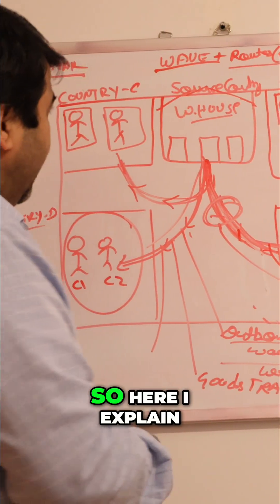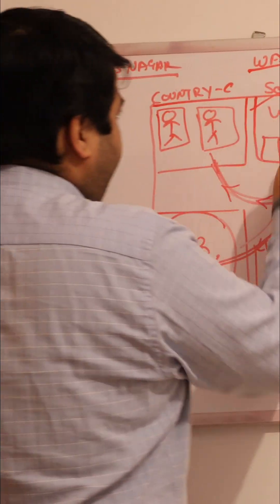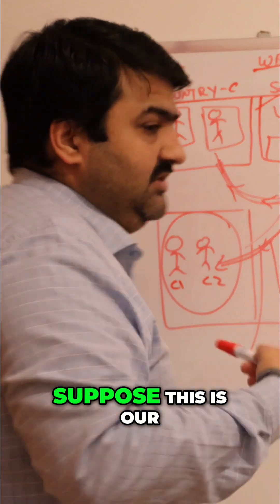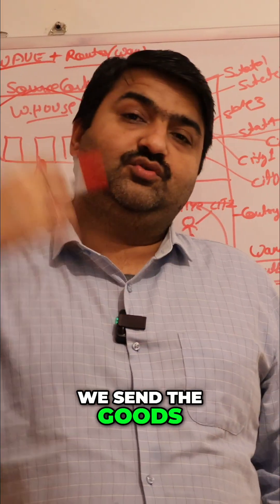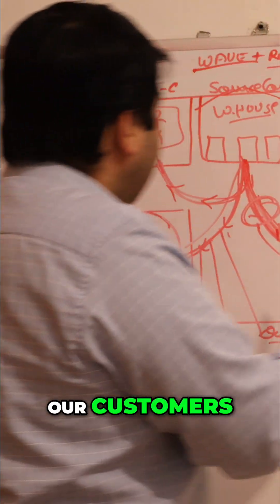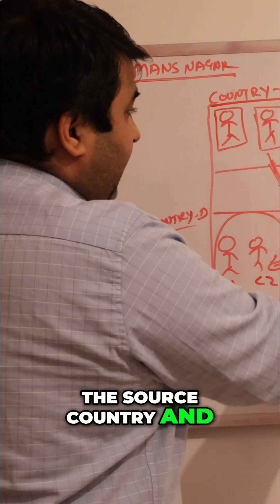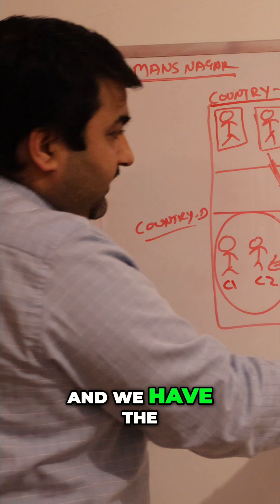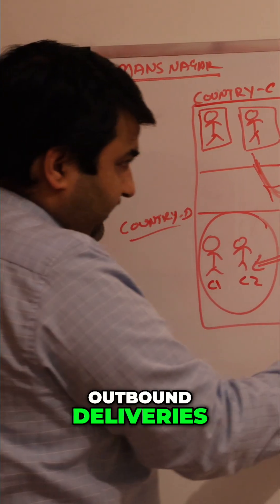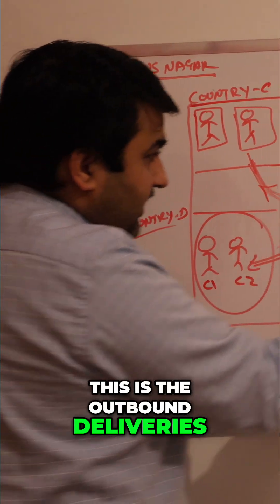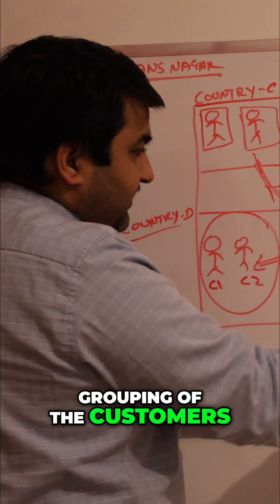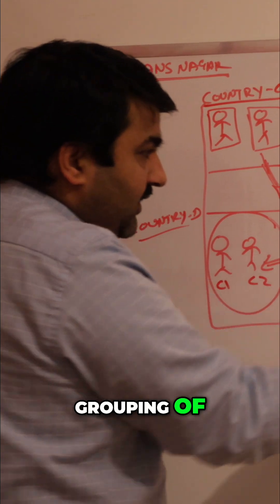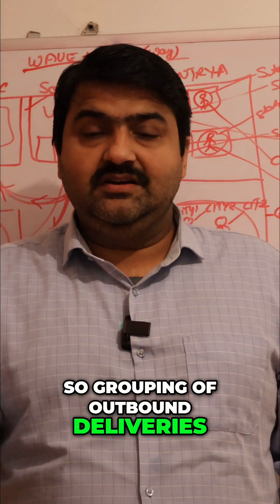Here I explain: our warehouse is located here, which is the source country. Suppose this is our country from where we send the goods to our customers. We have the source country, our warehouse, and the outbound deliveries. This grouping of customers is the wave — we call it the grouping of outbound deliveries.